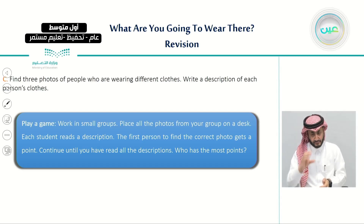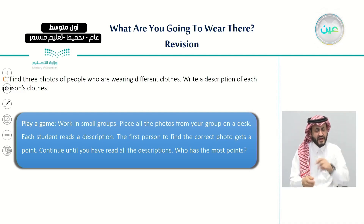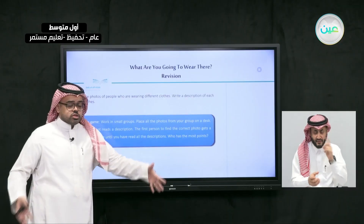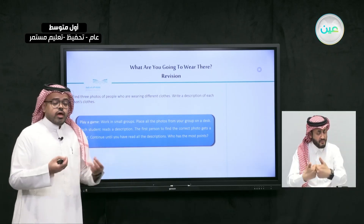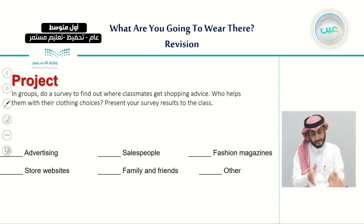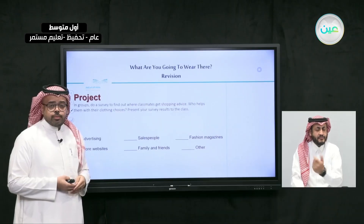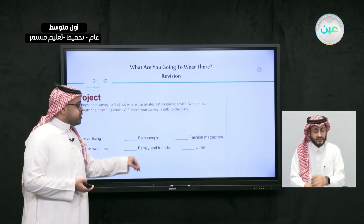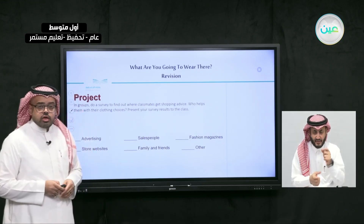With exercise C, I asked you to find three photos of people wearing different clothes and write a description of each person. You can put the pictures on a table — this was a home exercise to do with a family member or friends, where people point to the person you have described. Also for the project, do a survey about who helps with clothing choices: salespeople, family, fashion advertising, or store websites.